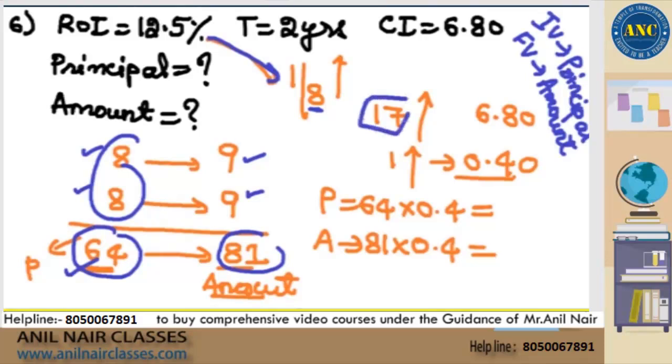17 increase. But according to the question, what is increase? 6.8. 17 increase will correspond to 6.8. That means 1 increase is nothing but 0.4.